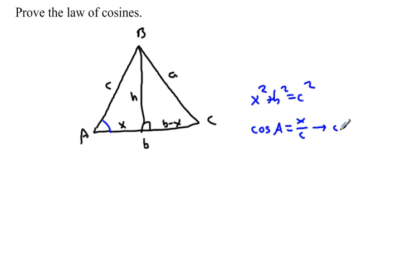I get the cosine of angle A times c. Let's write that the other way around. Let's say c times the cosine of angle A is equal to x. Let's just keep these two ideas in mind for later on.